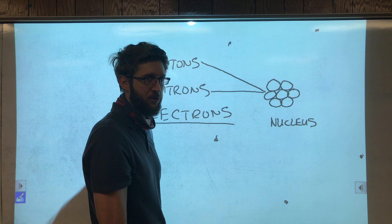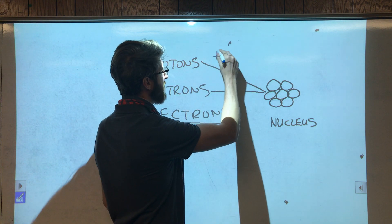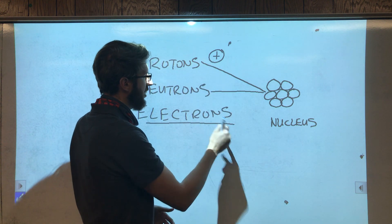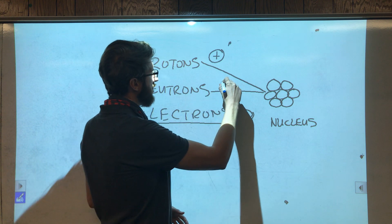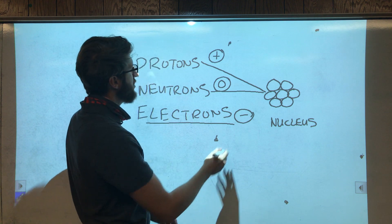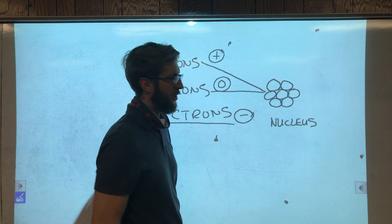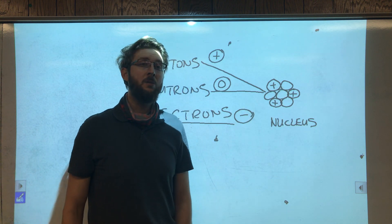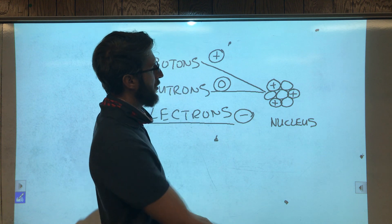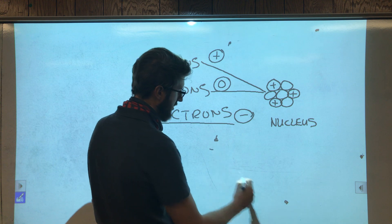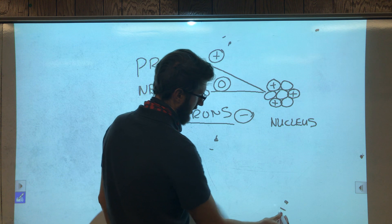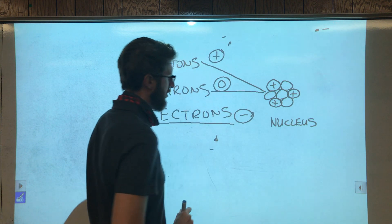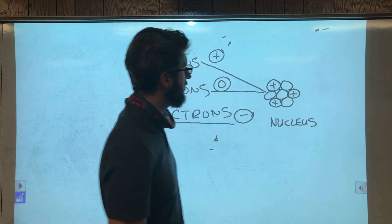Now, these things have electrical charges. Protons have a positive charge — just like on a battery, there's a positive end and a negative end. Atoms are similar. Protons are positive. Electrons have a negative charge. And neutrons have a zero charge, or neutral. So in the nucleus, we have protons and neutrons — some of these will be positive protons, and the others will be neutral neutrons. And around the nucleus you have electrons.